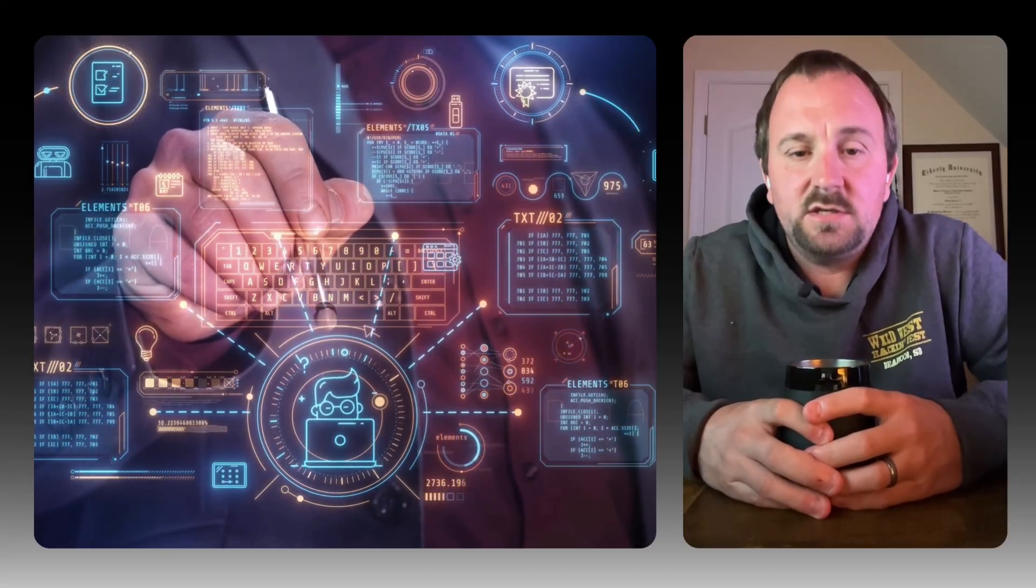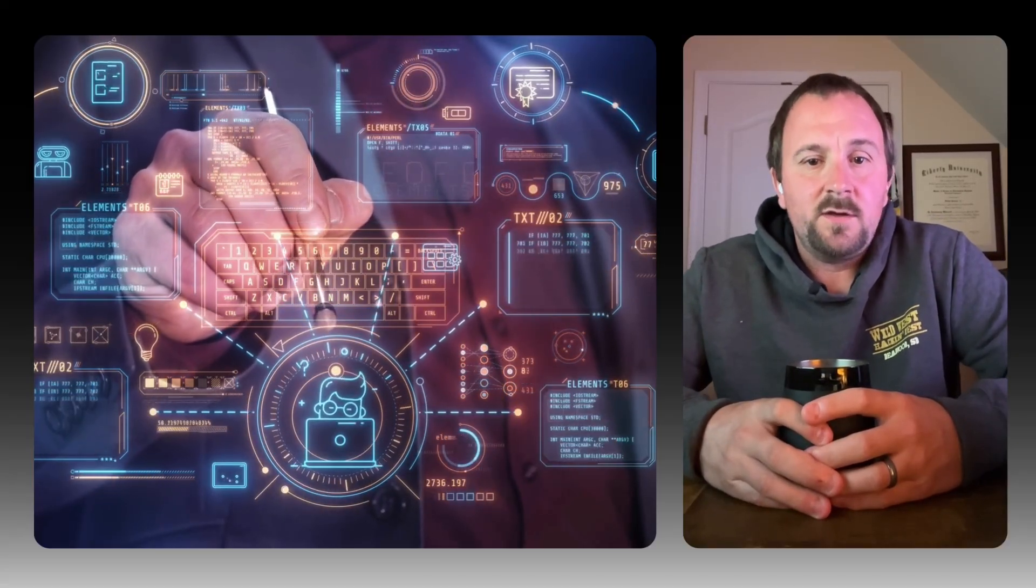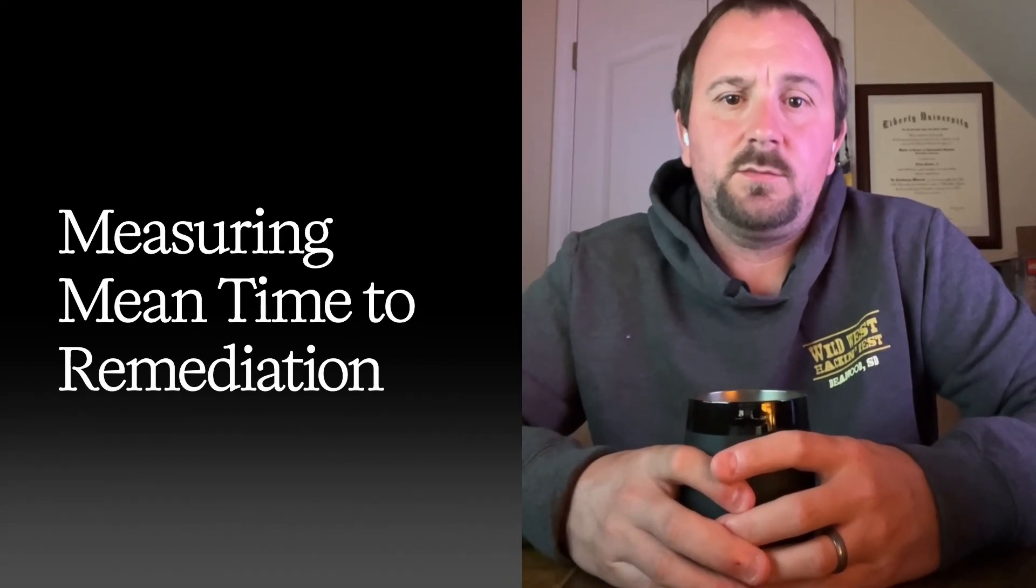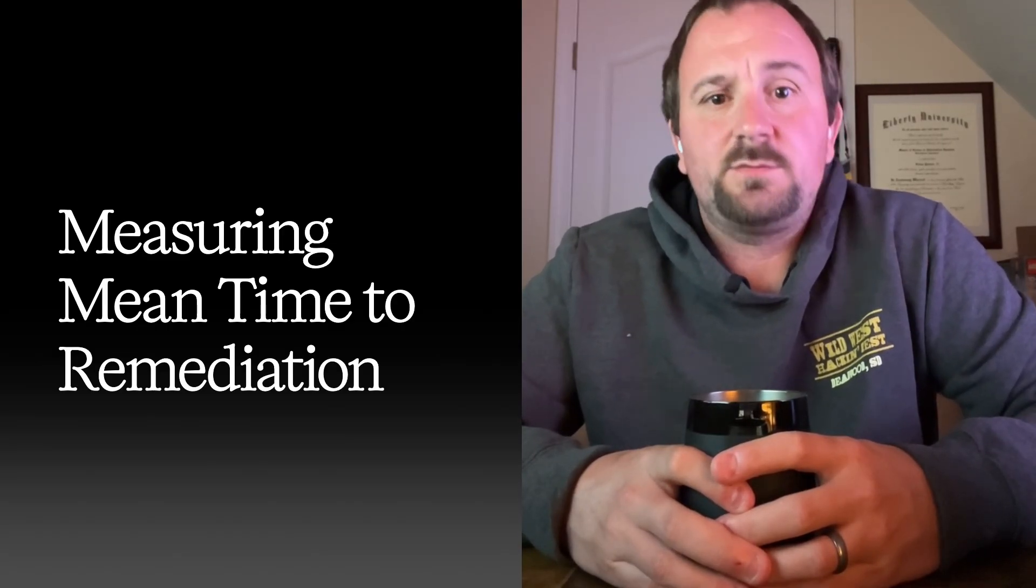So what should we be measuring instead? Here's the shift. Stop measuring security activity and start measuring security outcomes. Instead of vulnerabilities closed, let's measure the mean time to remediation of our critical vulnerabilities in production. This tells you how fast you respond to actual risk. If your mean time to resolution for critical vulnerabilities is 60 days, you're giving attackers two months to exploit known weaknesses. That's your real security posture, not how many low-priority bugs that you fixed.